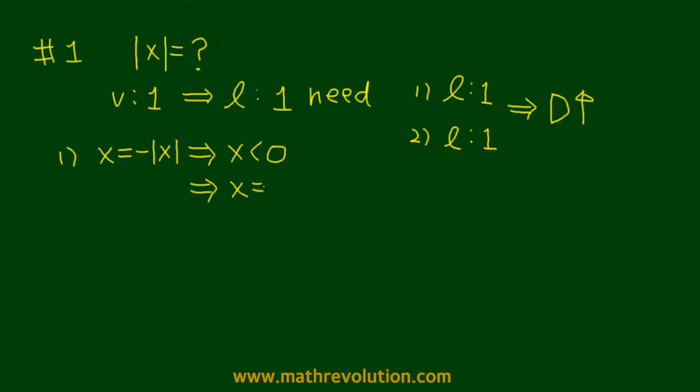x could be negative 1, negative 2, and so on. So 1 by itself is not a sufficient condition.